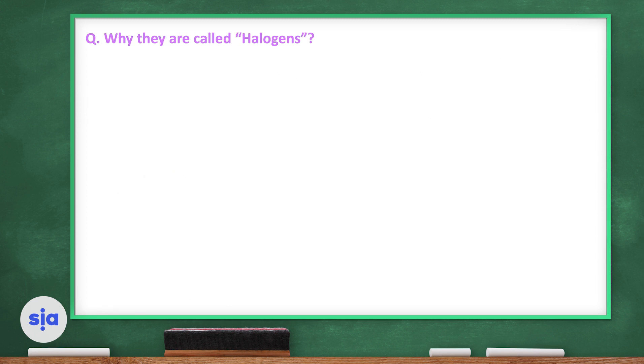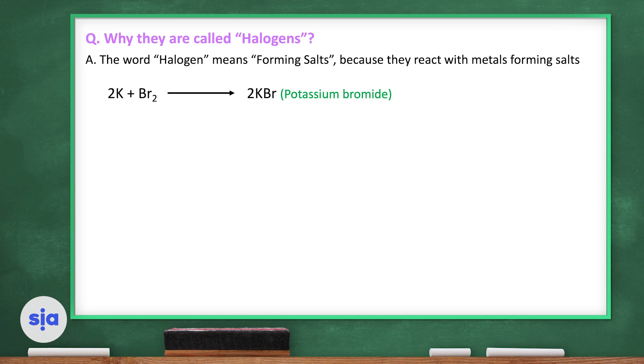So let's think together why they are called halogens. The word halogen means forming salts because they react with metals forming salts. For example, if we have potassium, a metal, and bromine, a halogen, when they react together, they will form potassium bromide. Sodium also can react with chlorine forming sodium chloride, which is the table salt.